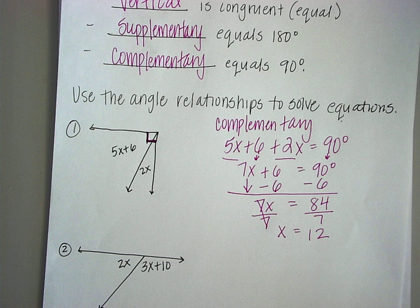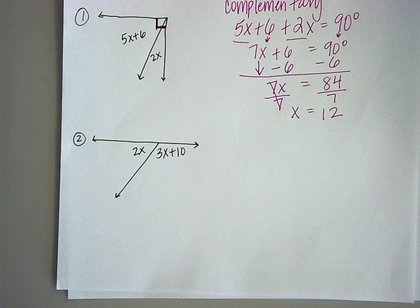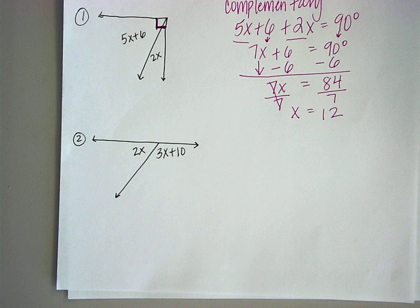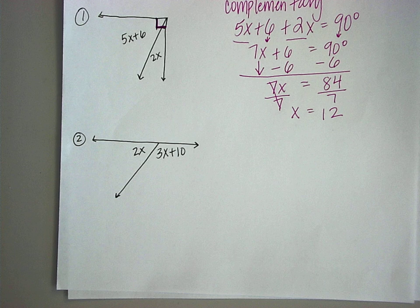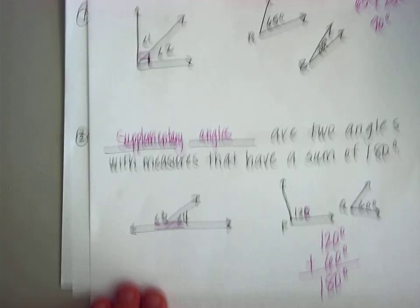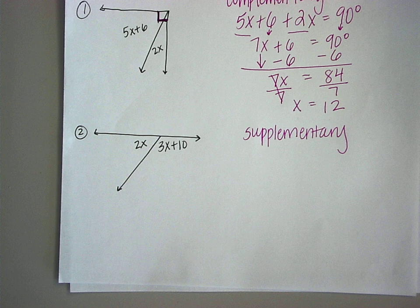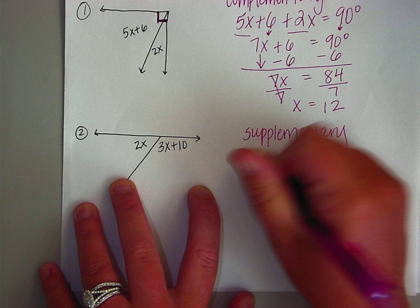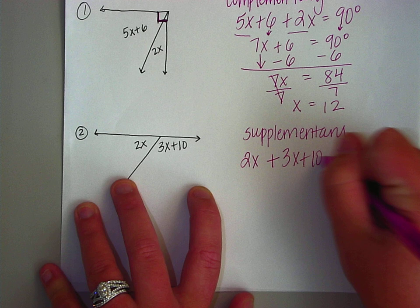We're reviewing and doing the equations. Let's look at number 2. Think about what relationship number 2 is. It is supplementary — it forms a straight line. Looking at the definition, the two angles have a sum of 180 degrees. So these two angles have to have a sum of 180 degrees. We're going to say 2x plus 3x plus 10 equals 180 degrees.